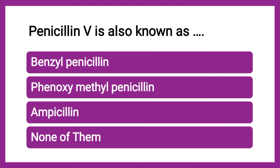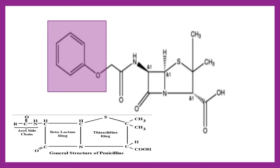Next question: Penicillin V is also known as — benzyl penicillin, phenoxymethyl penicillin, ampicillin, or none. The correct answer is phenoxymethyl penicillin. In the general structure, there is a thiazolidine ring, a beta-lactam ring, and an acyl side chain (NHCO). The R group here is a phenyl ring, oxy, and CH2 — making it phenoxymethyl penicillin, hence the name Penicillin V.